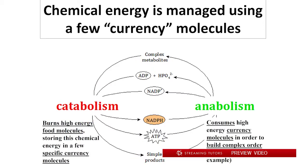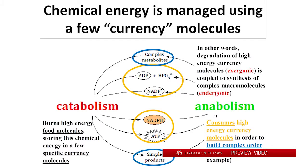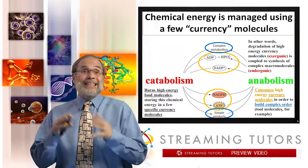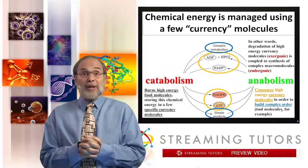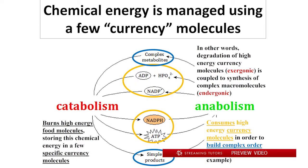Let's now contrast that with anabolism. With anabolism, the organism is going to take the high-energy currency molecules produced by catabolism — NAD phosphate and ATP — and use those to synthesize large, complex molecules. In other words, they're going to take the exergonic reaction of burning the currency molecules and drive endergonic reactions like synthesizing macromolecules. Macromolecular synthesis includes the replication of DNA and genetic design information, the building of biochemical tools, and the ongoing flux of matter through metabolism.